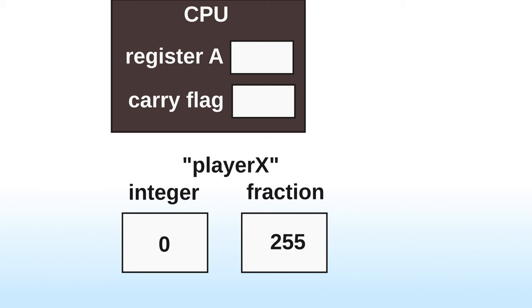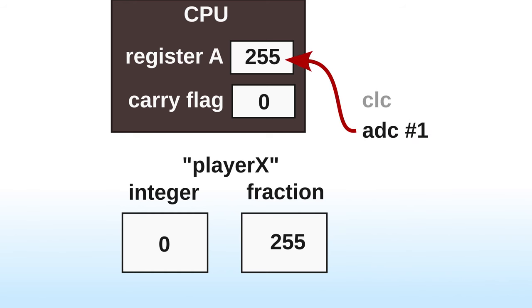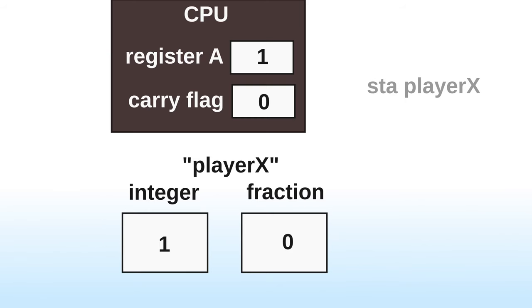So if we had the integer part as 0 and the fractional part as 255, and we add 1 to the fractional part, the integer part should turn to 1. You can also think of this second byte as a kind of delay counter — basically we're incrementing or decrementing this counter before we do anything with the main number. I've definitely used this behavior before in this game.